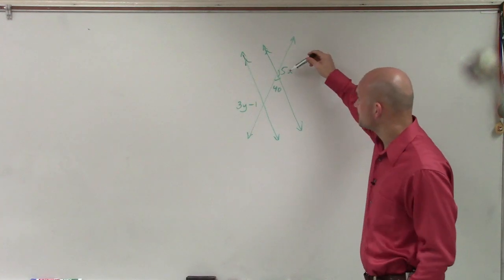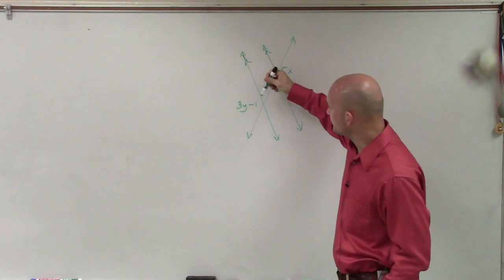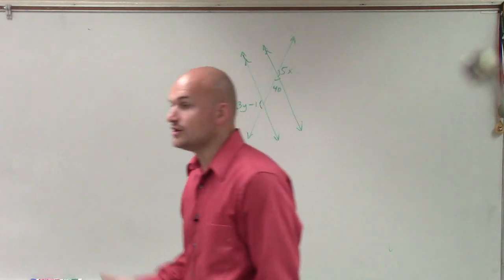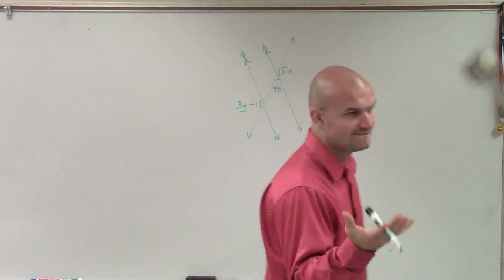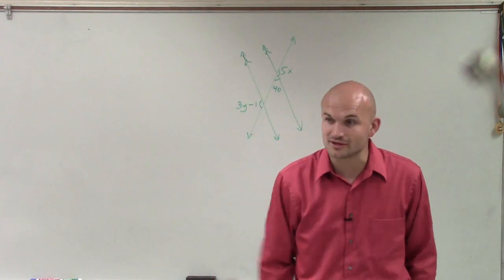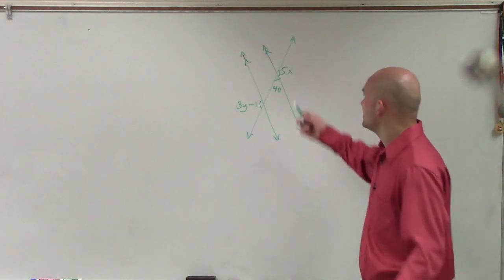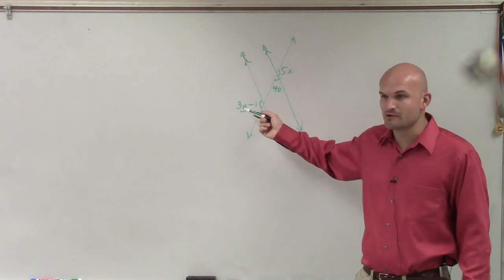We understand that 5x and 3y minus 1, those are both alternate exterior angles. And we know that alternate exterior angles are equal to each other. They're equal in value or equal in measure. However, the problem is, here we have a 5x, and here we have a 3y.